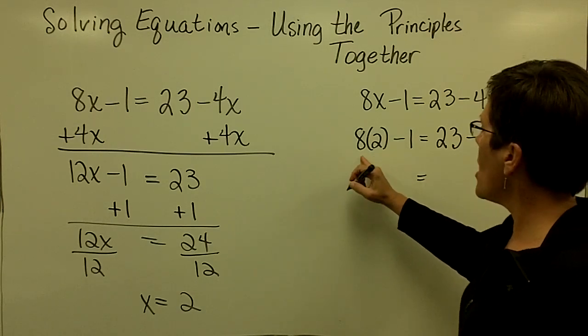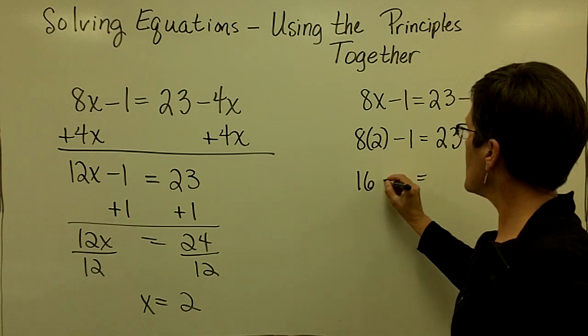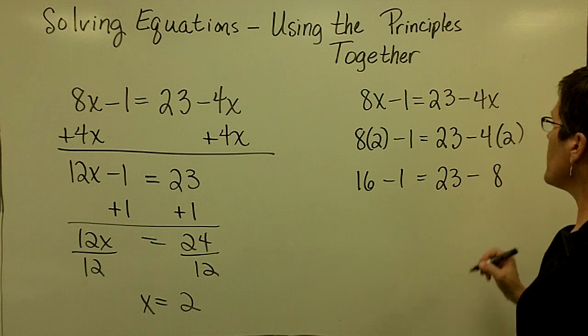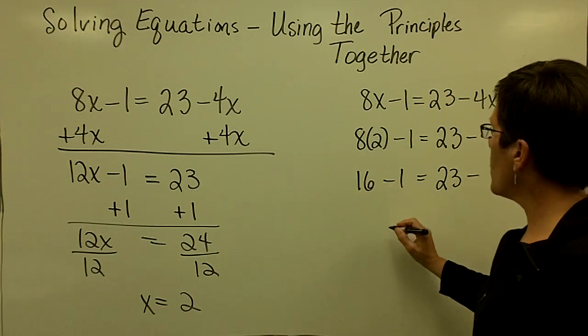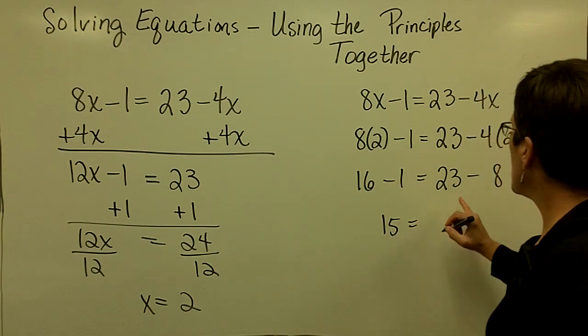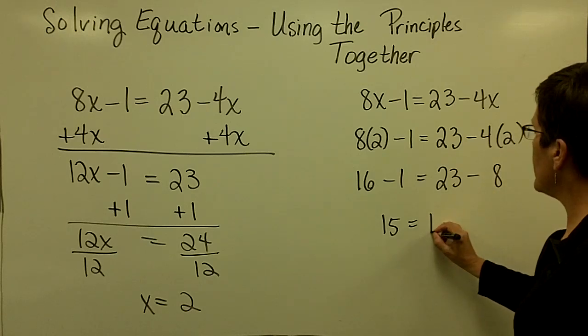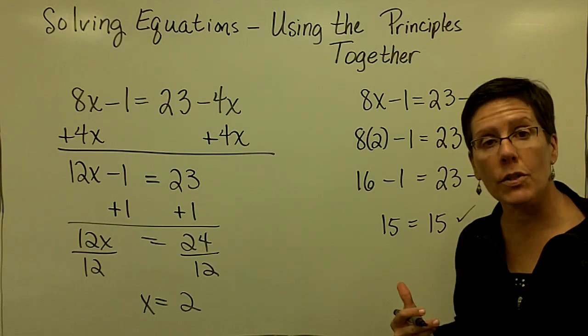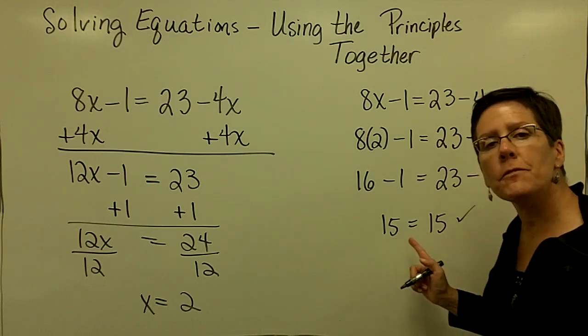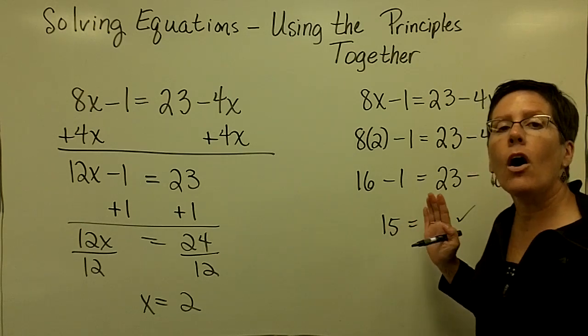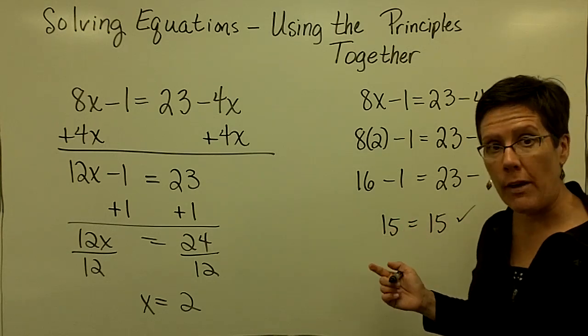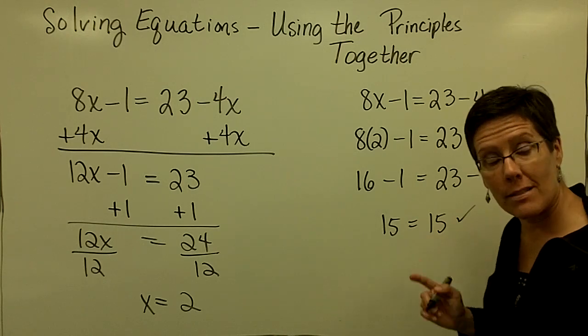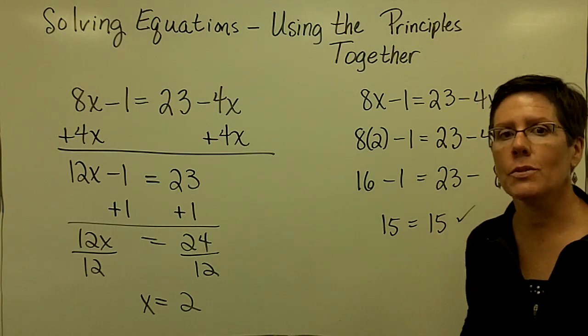Again, order of operations says to multiply first. And over here, multiply the 4 times 2, so I have 23 minus 8. 16 minus 1 is 15. And 23 minus 8 is 15. And what I found out is the value of 2 for x works in this equation. The number 15 is meaningless. All that I found out is when I put the value that is the solution of the equation to both sides, that they balanced. It's that balance scale situation again. Let's do another problem.